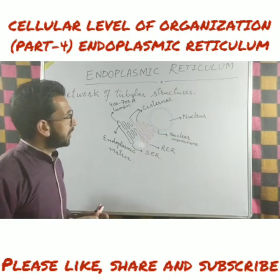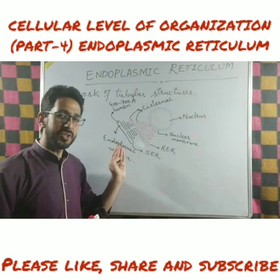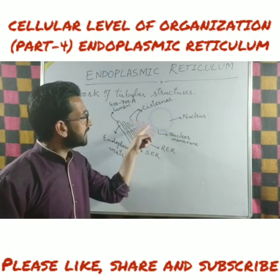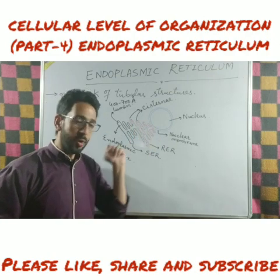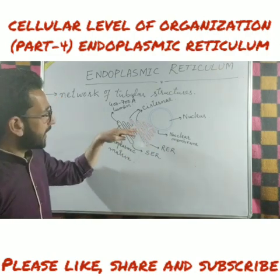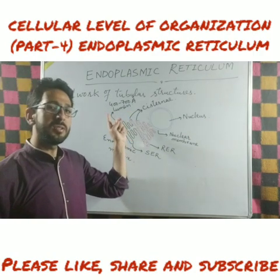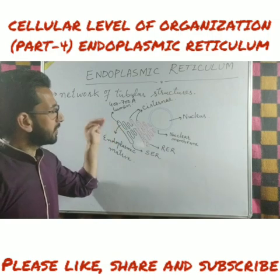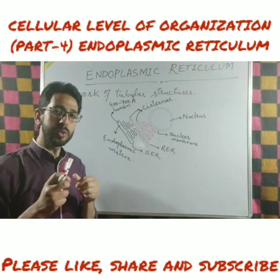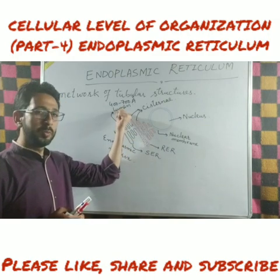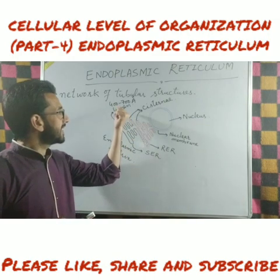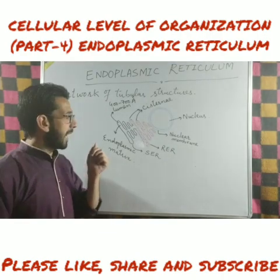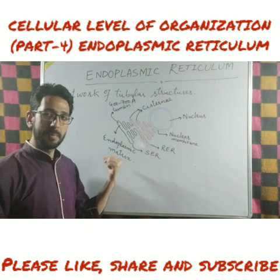This endoplasmic reticulum is a network of tubular structures which are interconnected to each other, and these tubular structures are continuous with the nuclear membrane. The hollow space inside is called as the lumen of endoplasmic reticulum, with a diameter of 400 to 700 angstrom, and it is filled with a fluid called the endoplasmic matrix.